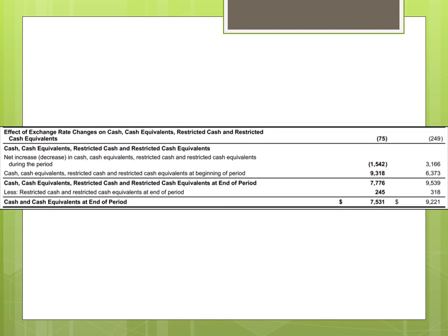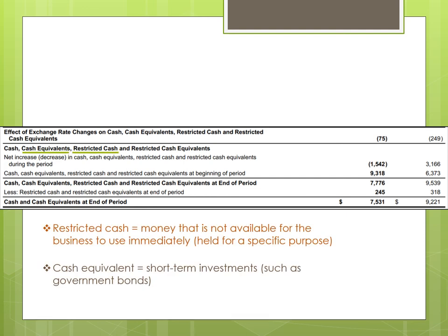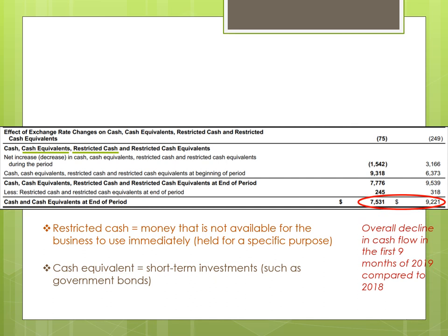Lastly, there are some additional terms at the end of the cash flow statement. 'Restricted cash' is money you have but that isn't available to use immediately — it's held for a specific purpose, similar to retained profits but in cash form. 'Cash equivalents' refers to short-term investments such as government bonds, where the cash is held and returned at a later date. Throughout the statement, Coca-Cola compares figures across periods — in the previous period it was $9,221 million, and in the current period it has decreased, meaning there were more cash outflows than inflows. The business can then ask: what's gone wrong and how can we improve?